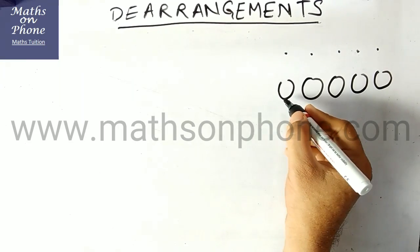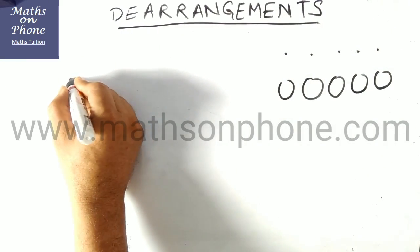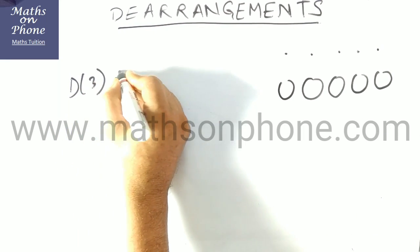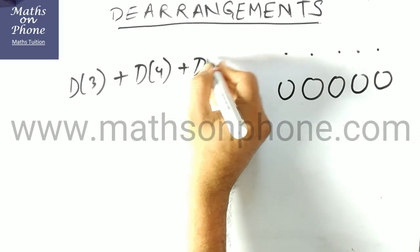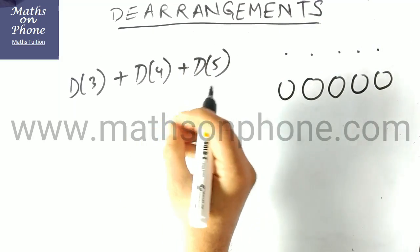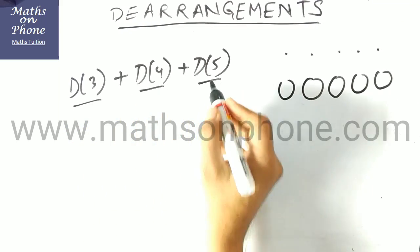So we need to find at least 3 derangements. That means what we need to find? D(3), derangement of 3, plus D(4), derangement of 4, plus D(5), derangement of 5. At least 3 means 3 and more. So can be 3, can be 4, can be 5.